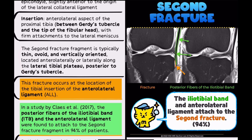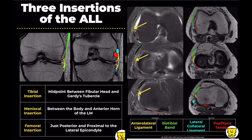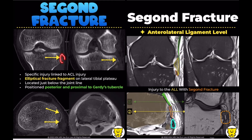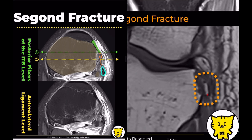The key is understanding the anatomy of the anterolateral ligament tibial insertion. It is located at the midpoint between the fibular head and Gerdy's tubercle, approximately 4 to 7 mm below the tibial plateau. If you see a thin, ovoid, vertically-oriented bony fragment positioned anterolaterally or laterally along the lateral tibial plateau, but posterior to Gerdy's tubercle, this is a Segond fracture.